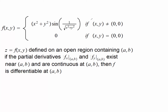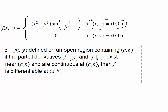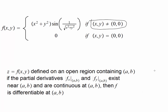First let's focus our attention on the points that are not at the origin. We'll calculate the partial derivatives using the formula. The partial derivative with respect to x involves differentiating this product. Differentiating the first factor gives 2x, then sine of 1 over the square root of x² + y², plus leaving the first factor unaffected and differentiating the second factor.